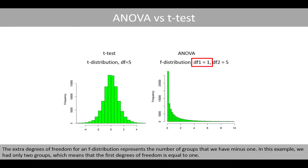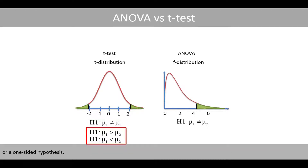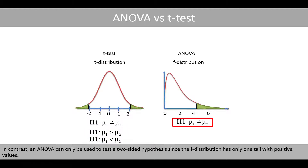The extra degrees of freedom for an F-distribution represents the number of groups that we have minus one. In this example, we had only two groups, which means that the first degrees of freedom is equal to one. Since the t-distribution has both positive and negative values, a t-test can therefore be used to test either a two-sided hypothesis to test if the two means are different, or a one-sided hypothesis to test if one mean is either greater or less than the other mean. In contrast, an ANOVA can only be used to test the two-sided hypothesis since the F-distribution has only one tail with positive values.